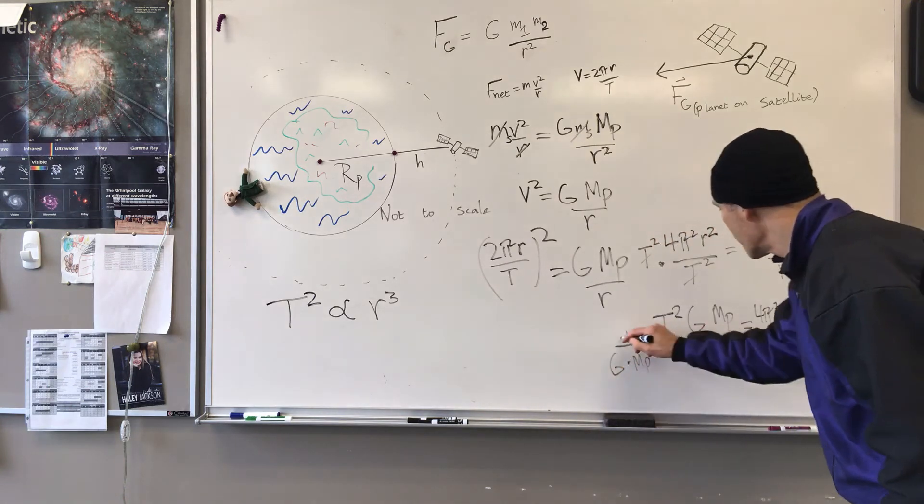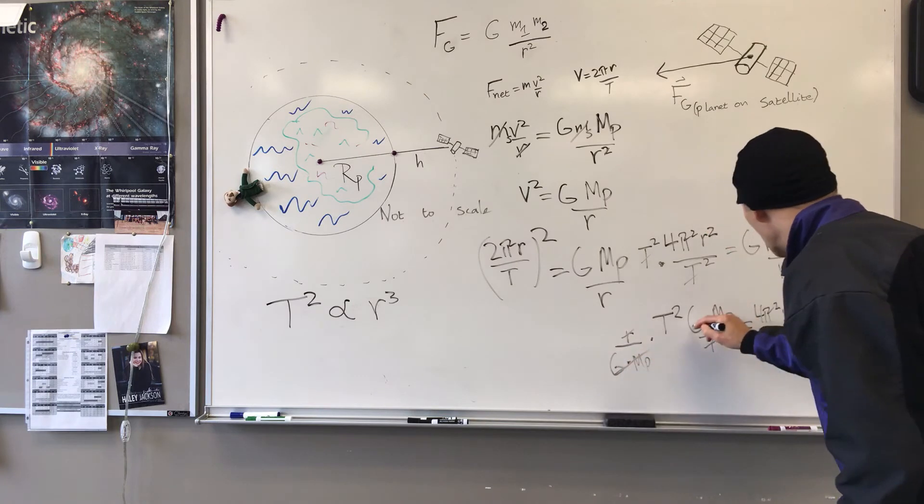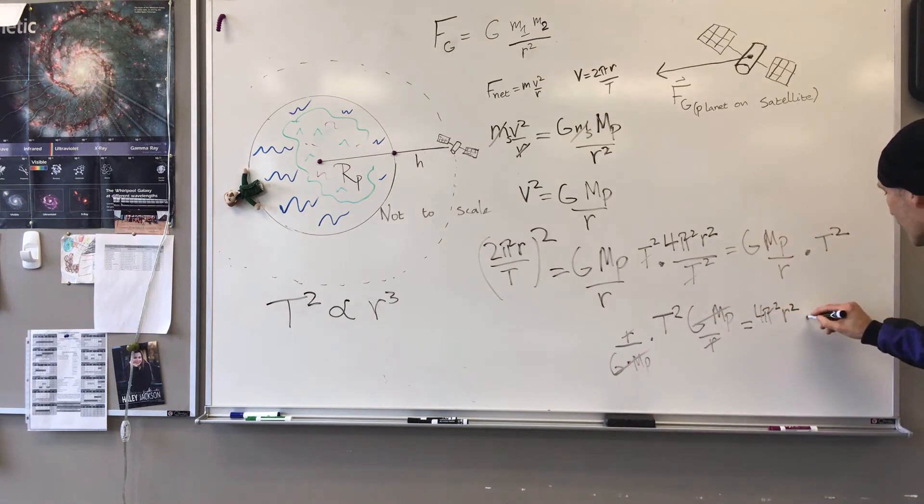That divides everything out on the left side. And I'm multiplying by R over G, mass of the planet, on the right side.